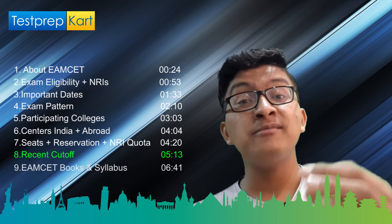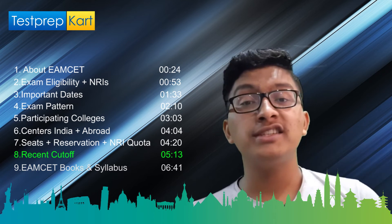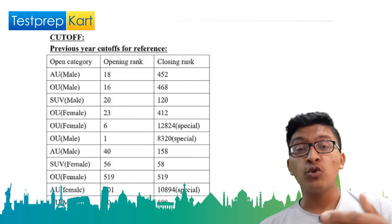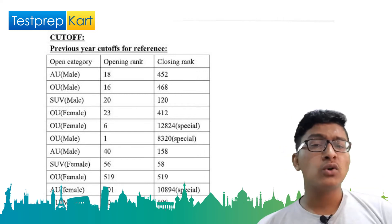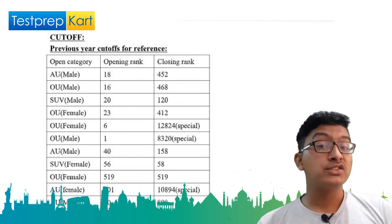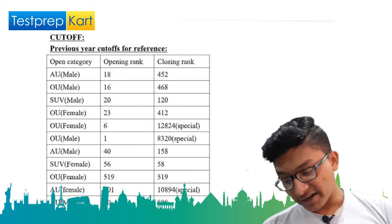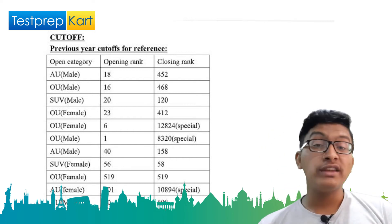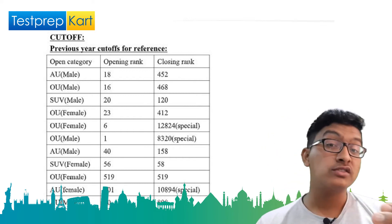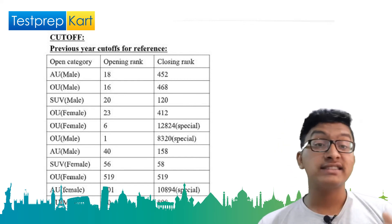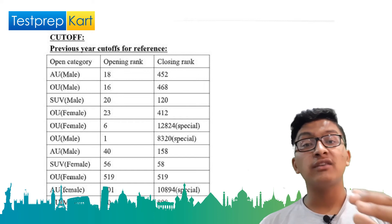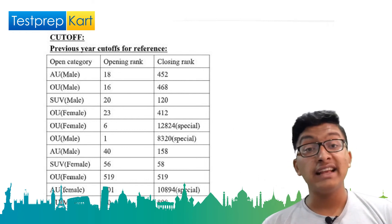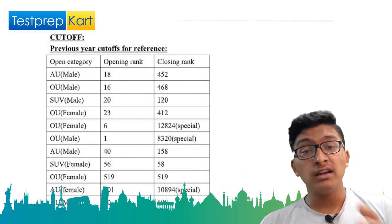For EAMCET cut-offs, we will discuss the ranks required for top branches at two top colleges, based on previous year statistics. At Andhra University, Visakhapatnam — one of the best colleges in Andhra Pradesh and Telangana — to get Computer Science Engineering you need a rank under 1000; Electronics and Communication requires under 1400; Mechanical Engineering under 1600; Chemical Engineering under 4000; and Metallurgical Engineering under 9500.